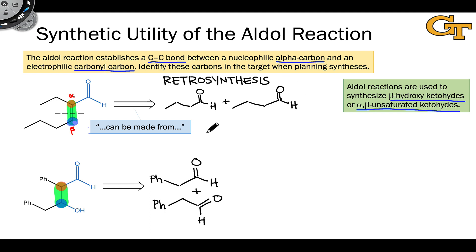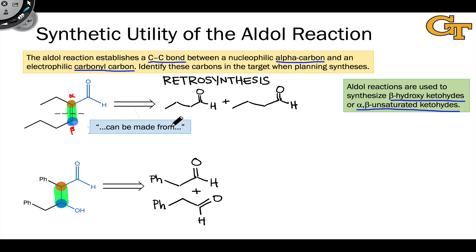Both of these retrosynthetic analyses amount to dimerization processes, with the same aldehyde reacting in both a nucleophilic and an electrophilic role. The retrosynthetic arrow — with two bolded lines and an open structure — is read as 'can be made from' or 'is derived from.' So we can say this alpha-beta unsaturated aldehyde is derived from dimerization of, or reaction of, the aldehyde with itself.